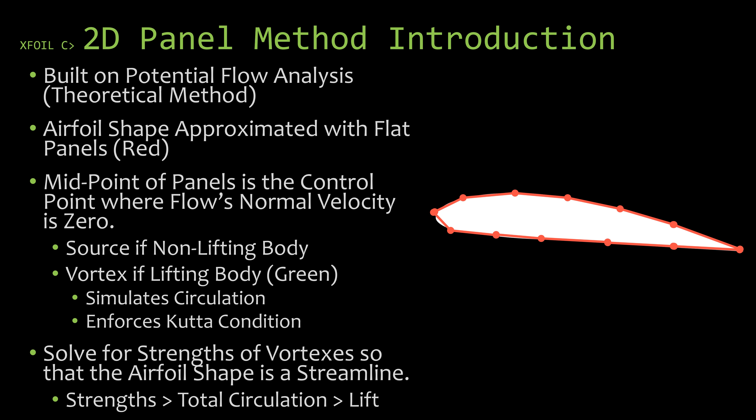So the first step is that you have your airfoil shape and you approximate it with flat panels, as shown there in red. Now what happens with these flat panels is that the midpoint of the panel — the midpoint of the line — is what's called a control point, also sometimes called a collocation point. One of the key attributes is that at that point, the flow has a normal velocity of zero, so it's completely tangential to the midpoint.